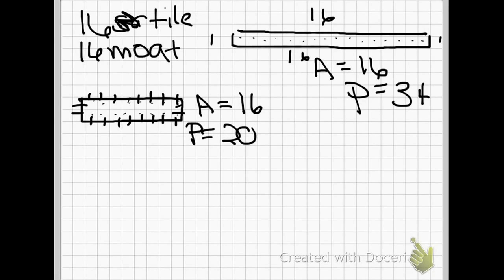That is way more than 16. So my 16 moat blocks are not going to be able to go around this castle. So what I'm going to have to do is try again to see if I can make a rectangle with an area of 16 but a perimeter of 16.